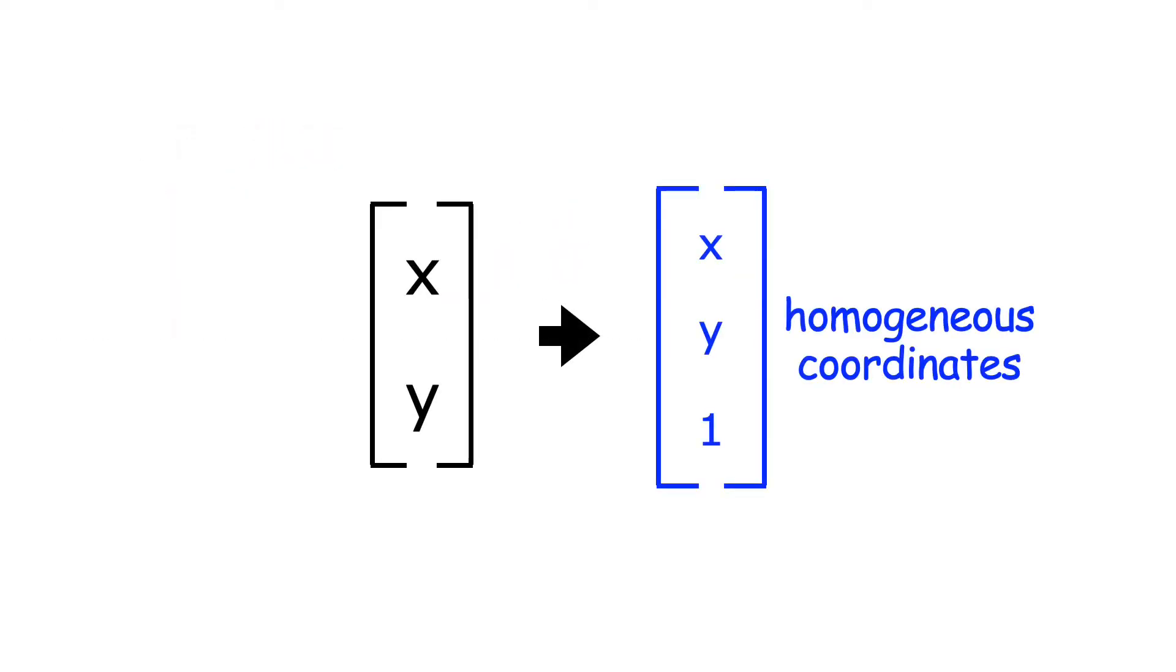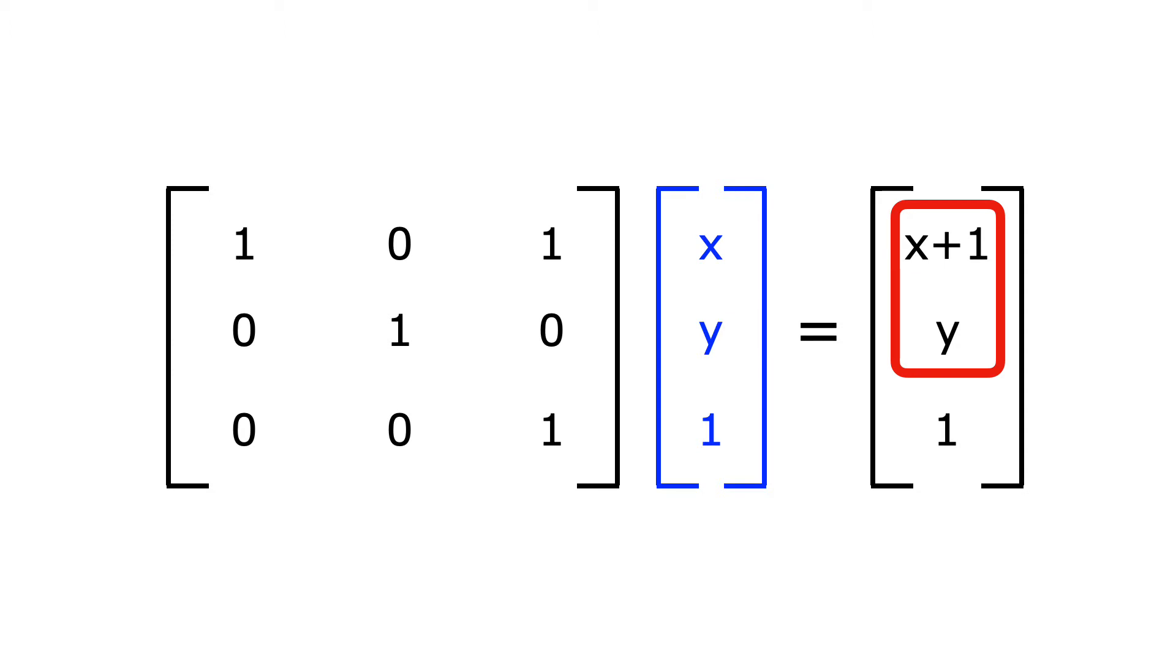There's another way to represent this projection using homogeneous coordinates. Remember in our affine transformation video, we talked about a clever way to encode transformations by adding an additional coordinate to our point vectors. A big advantage was that it lets you perform translations with a 3x3 matrix.